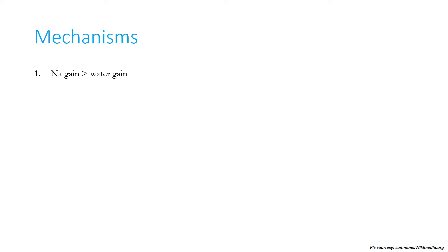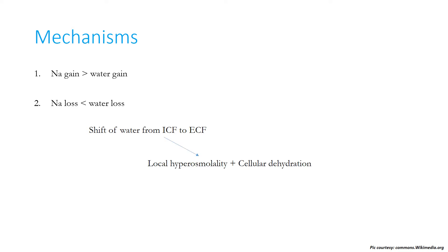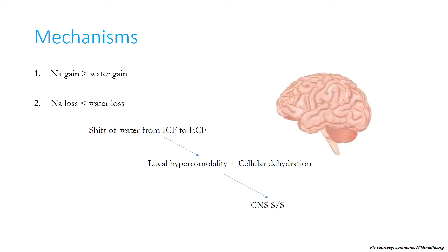There are principally two major mechanisms to understand: either the gain in sodium by the body is more than the gain in water, or the loss in sodium by the body is less than the loss in water. Ultimately in hypernatremia, there is a shift of water from the intracellular fluid to the extracellular fluid because sodium is osmotically active, leading to local hyperosmolality and cellular dehydration, with symptoms and signs most prominent in the central nervous system.